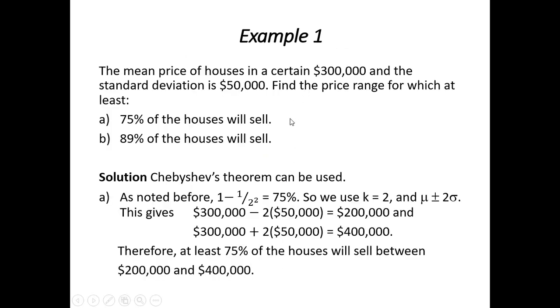Now let's look at some examples. Suppose we know that the mean price of houses in a certain neighborhood is $300,000 and the standard deviation is $50,000. Find the price range for which at least 75% of the houses will sell, and then part B, at least 89% of the houses will sell.